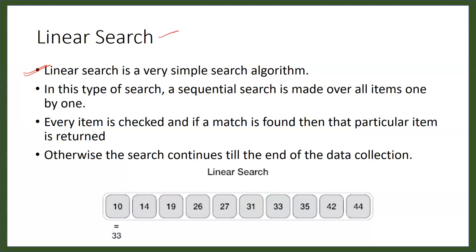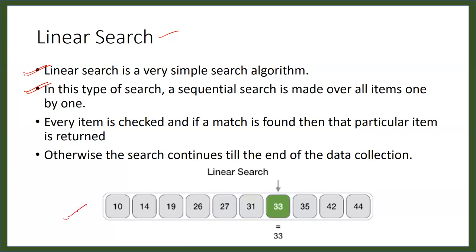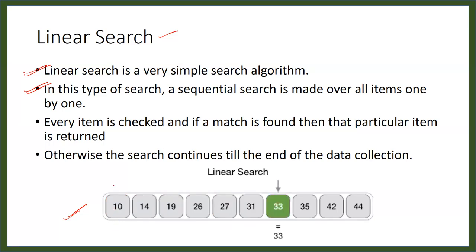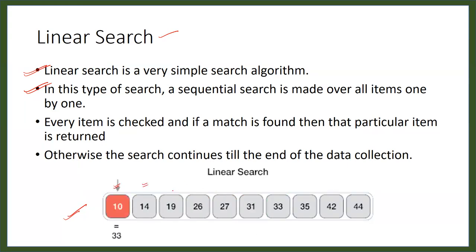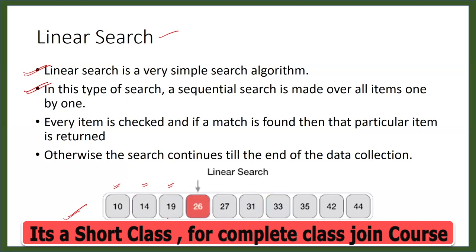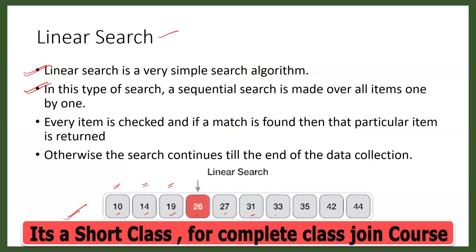In linear search, a sequential search is made through all items one by one. For example, if we are trying to find the number 33, we check it against every element in the array — is it at the first place, the second, the third, and so on. We compare each element: is 10 equal to 33, is 14 equal to 33, is 19 equal to 33, and so on. When we find the element at some index, we return that index.